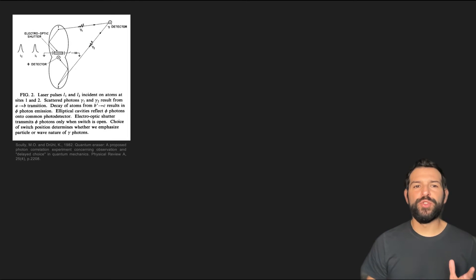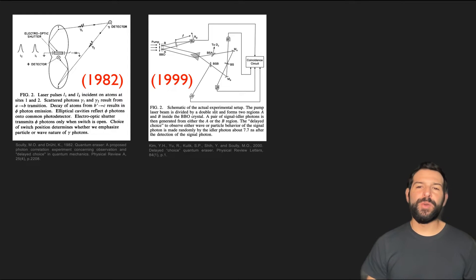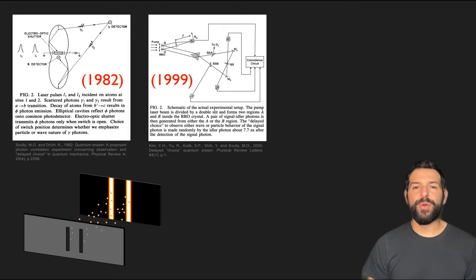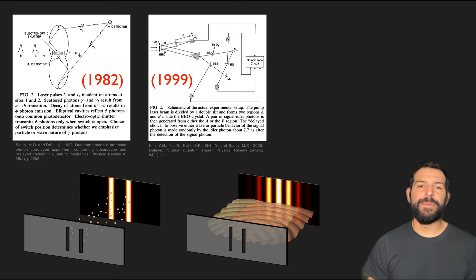The Delayed Choice Quantum Eraser Experiment was first proposed by Scully and Druhill in 1982 and experimentally demonstrated by researchers at the University of Maryland in 1999. The experiment was devised as a way to show how a quantum object, like a photon, can exhibit both particle-like or wave-like behavior depending on the availability of information about the particular slit through which a photon goes through in a double-slit experiment.